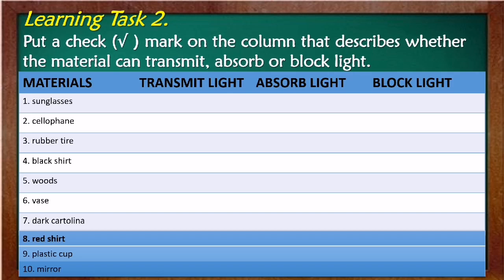For Learning Task Number Two, put a check mark on the column that describes whether the material can transmit, absorb, or block light. The materials are: sunglasses, cellophane, rubber tire, black shirt, woods, vase, dark cartolina, red shirt, plastic cap, and mirror. Check the column for transmit light, absorb light, or block light.